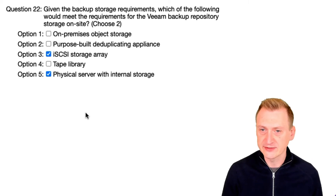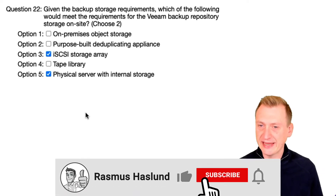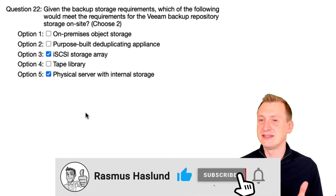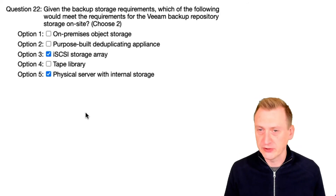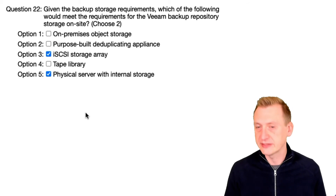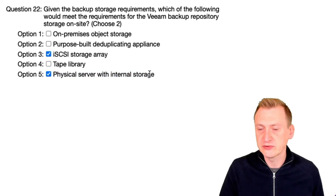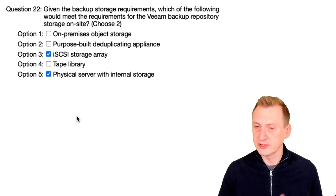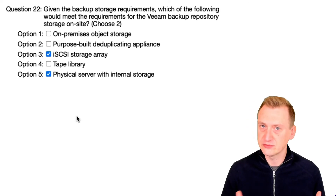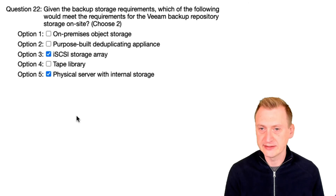The iSCSI storage array by itself can't do this, but we could use it as the underlying storage, mapped via iSCSI to a Linux repository, which can then be a hardened repository — that would work. A physical server with internal storage would also work; we could install Linux, turn it into a hardened repository. So the answers are options three and five.